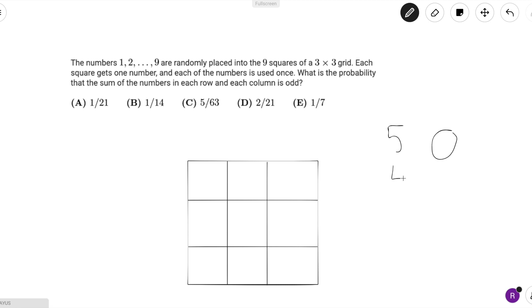And there are four even numbers because those are just two, four, six, and eight. We don't care about the even numbers because they don't affect if the sum of the numbers is even or odd. We only care about where the odd numbers go.